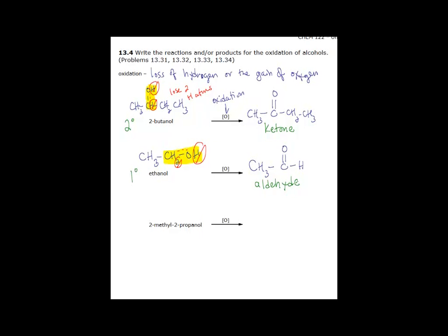So primary and secondary alcohols can be oxidized. Let's look at 2-methyl-2-propanol. So we have 3 carbons. Off the second carbon we have an OH and a methyl group.